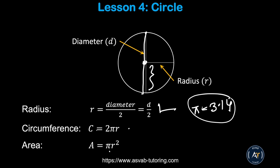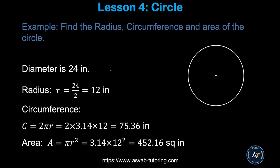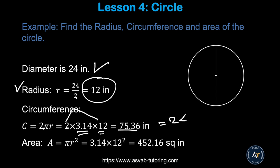Let's apply the formula to a problem. This circle has a diameter of 24 inches, so the radius is 24 divided by 2, which is 12 inches. The circumference equals 2 times 3.14 times 12, which gives you 75.6. Sometimes they'll ask you to do the problem in terms of pi — in that case it gives you 24 pi. For the area, pi times r squared equals 3.14 times 12 squared, which also equals 144 pi.